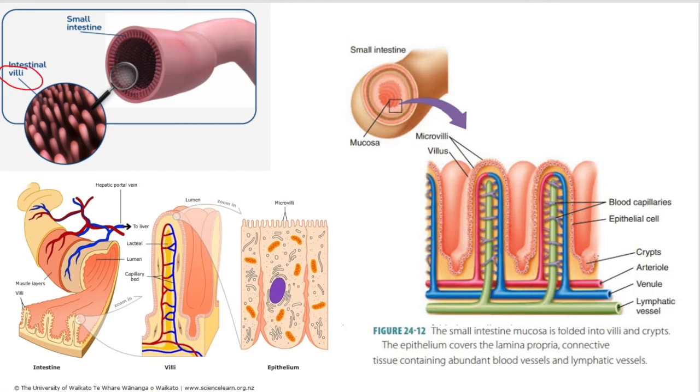The adaptation is it has a lot of infoldings, finger-like projections called the villi. On each villus, they have microvilli as well. This increases the surface area a lot for absorption into the bloodstream or the lymphatic capillary, and it's brought around your whole body for use.